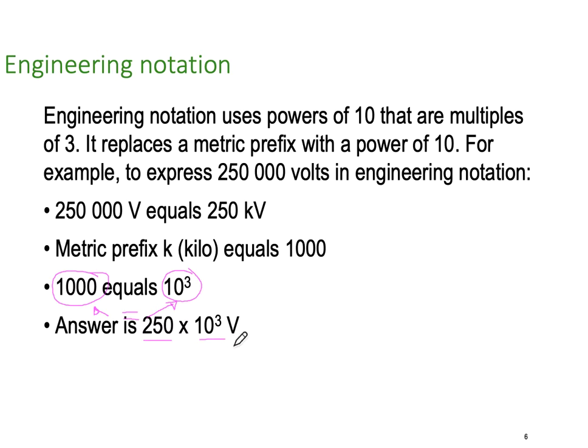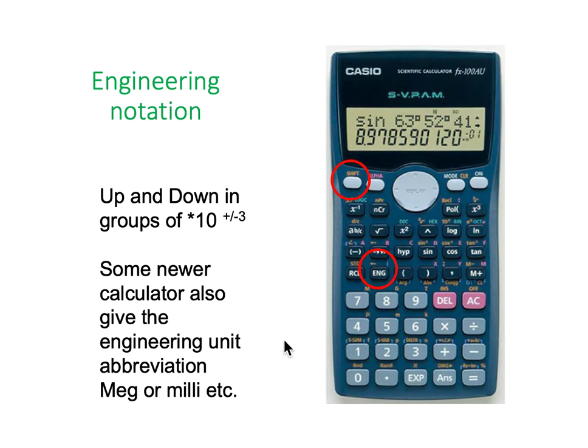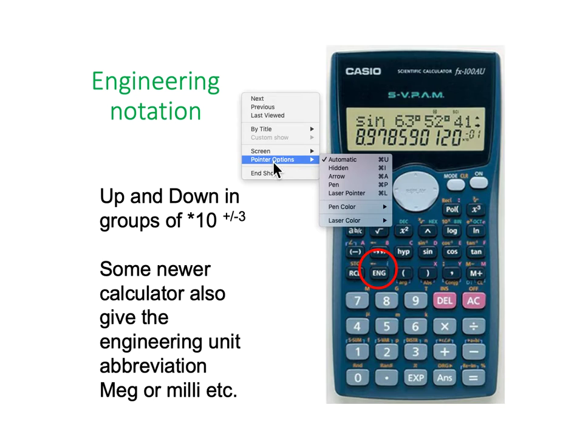But instead of writing times 10 to the 3, we can abbreviate this with kV. Engineering notation on your calculator. If you use the recommended VPAM calculator from Casio, one we like is the FX100AU, is one of my favourites.